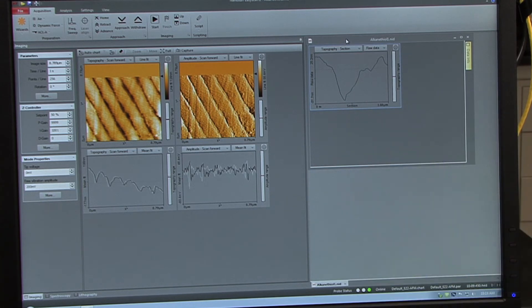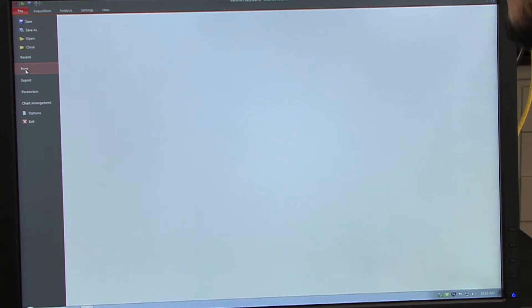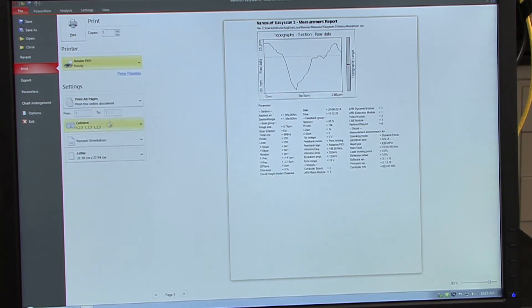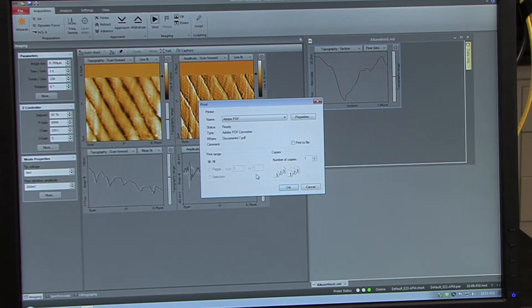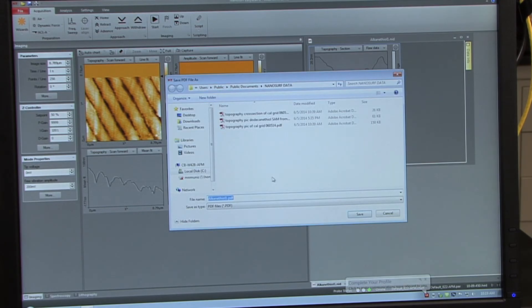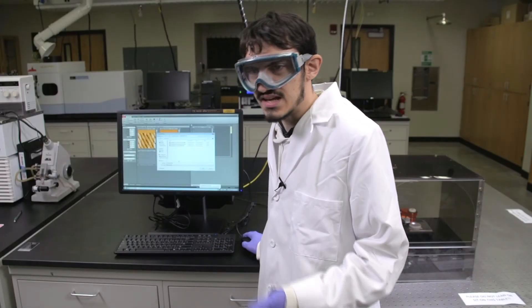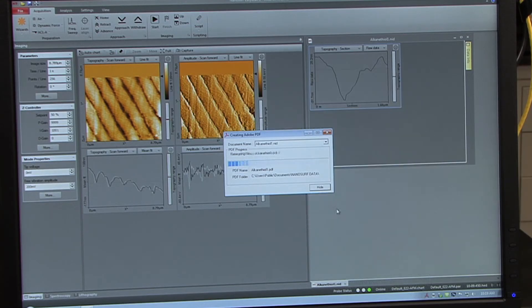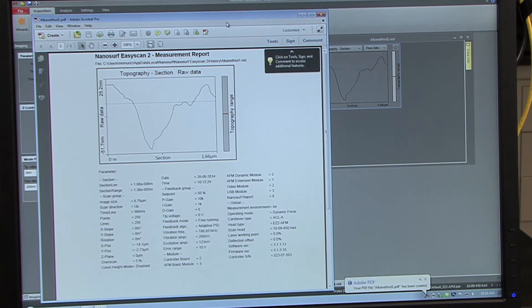Additionally, you can save the image as a PDF by going to file, print, going to printer, and clicking Adobe PDF, clicking print. And it will enable you to save the same file, but this time as a PDF image, which will then show up on the screen, along with the data itself.